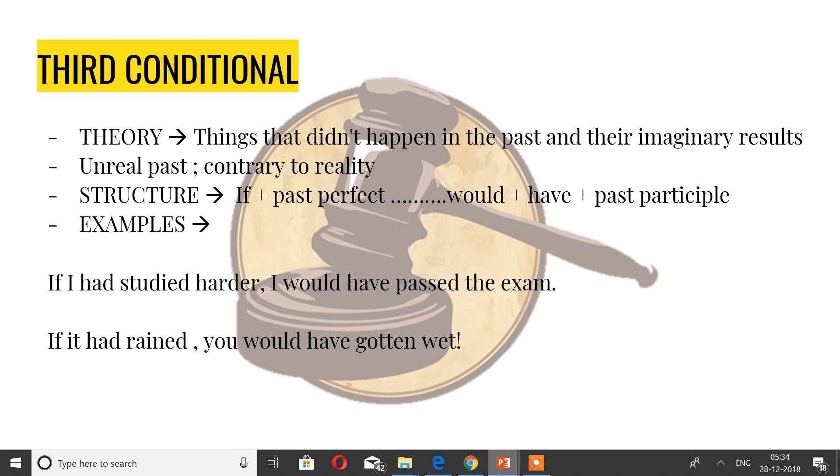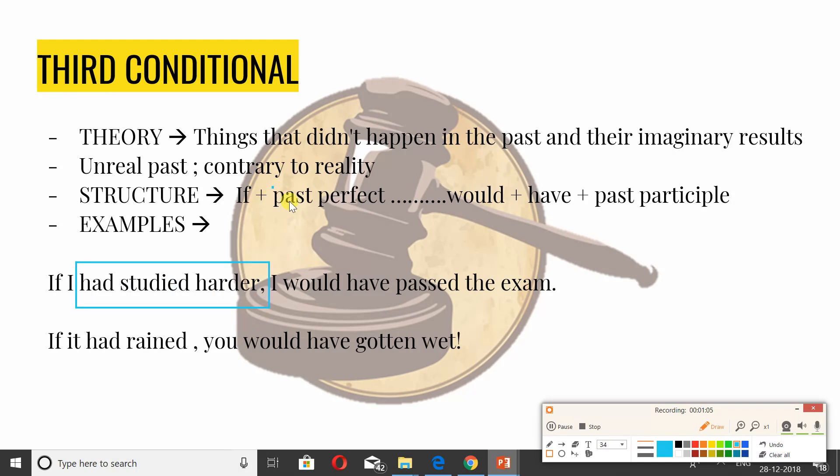Next up, we have the third conditional. In theory, these are things that didn't happen in the past and their imaginary results. It's an unreal past, contrary to reality. The structure is: if plus past perfect tense, then would plus have plus past participle. If we look at it like this: if I had studied harder, it's the past verb again. If it had rained, then I would have - would plus have plus past participle. I would have passed the exam, you would have gotten wet. I hope you guys are getting the structure. If I had studied harder, I would have passed. If it had rained, you would have gotten wet.